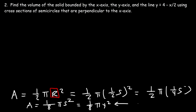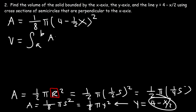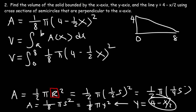We replace y with 4 minus one-half x, so the area function becomes one-eighth pi times (4 minus one-half x) squared. Now we have the area function in terms of x, which means we can use the volume equation. The graph is bounded between 0 and 8, so a equals 0 and b equals 8. We integrate the area function with respect to x.